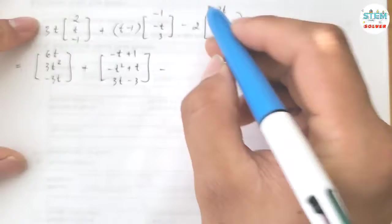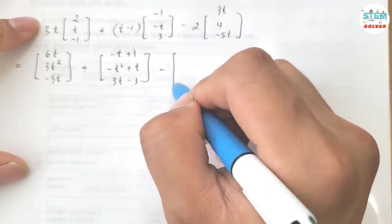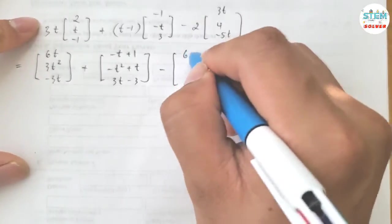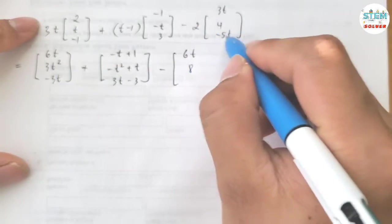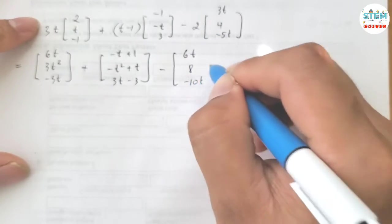And for the last matrix, 2 times 3t is 6t, 2 times 4 is 8, 2 times negative 5 is negative 10.